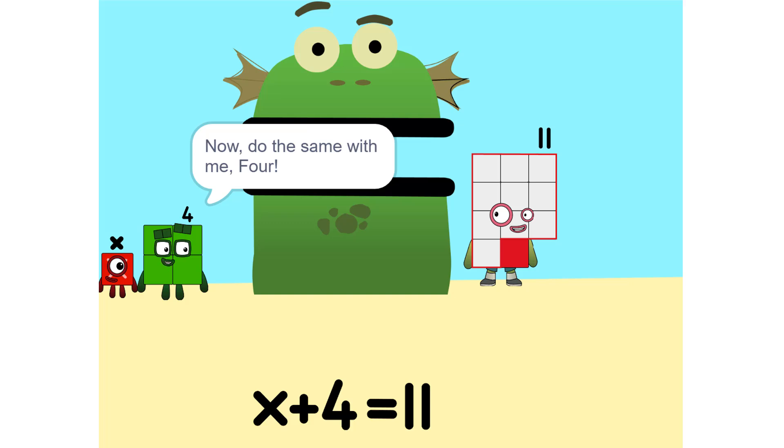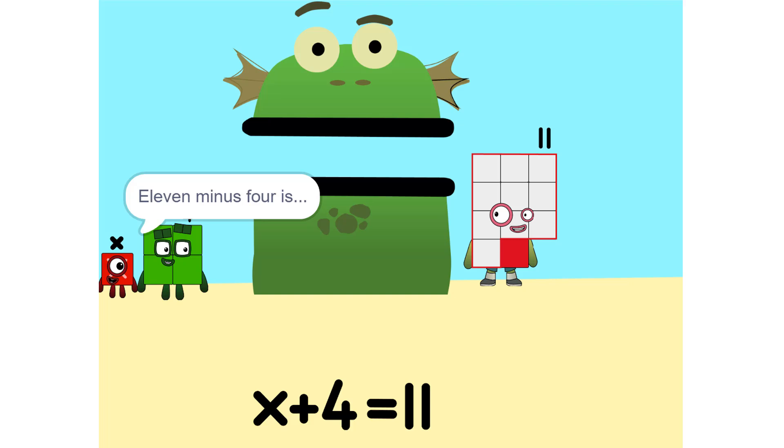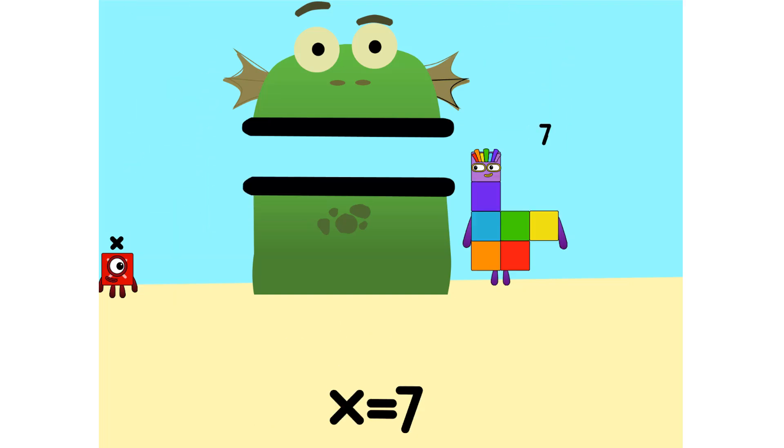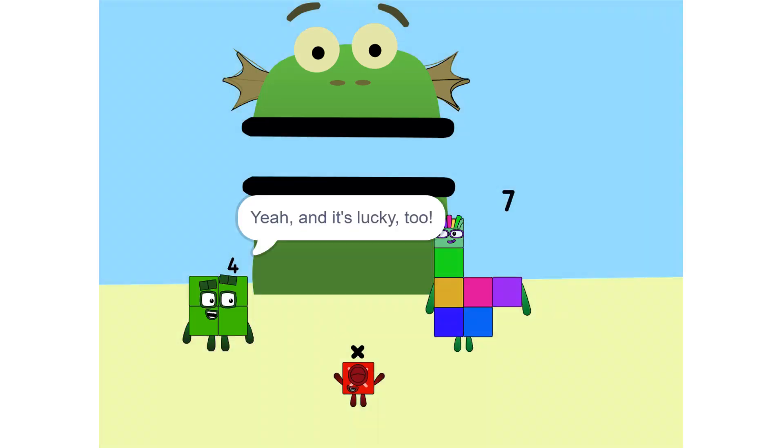Now do the same with the 4. Okay. 11 minus 4 is 7. So now what do I do? What's there left to do? Oh, X equals 7. Yeah, and it's lucky too.